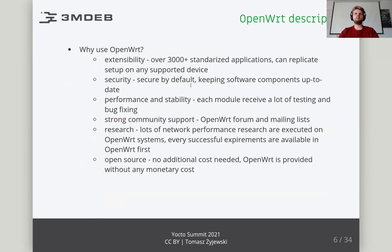There are many reasons for using OpenWrt. Among them we can mention extensibility — there are over 3000 packages ready to be installed on the device, allowing the system to be reproduced regardless of the platform. Security: being an open source project, OpenWrt is checked by many developers from around the world, so vulnerabilities are closed shortly after they are discovered and the life of used routers is extended. Community support: there are many forum and mailing list users ready to help. And research: a lot of networking research is carried out on OpenWrt systems, thanks to which the latest discoveries are available.